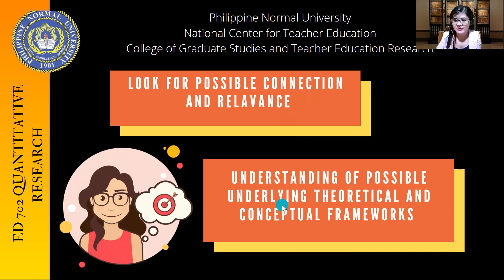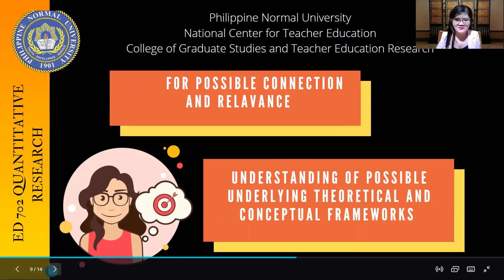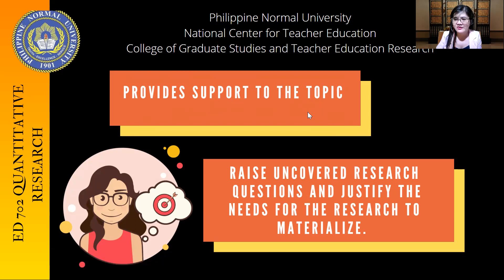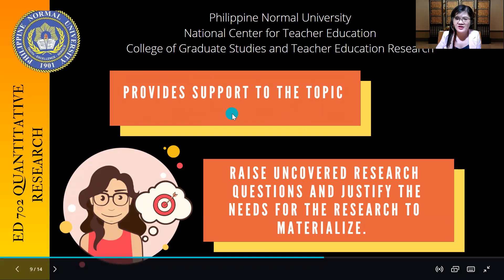Second is the understanding of possible underlying theoretical and conceptual frameworks. In searching for materials online, we are actually searching for ways to conceptualize our own research in terms of the theoretical framework and the conceptual framework. Next is to provide support to the topic — when we try to look for other materials, we are also trying to make our own materials credible by providing support and justifying why we need to conduct the same or related research.